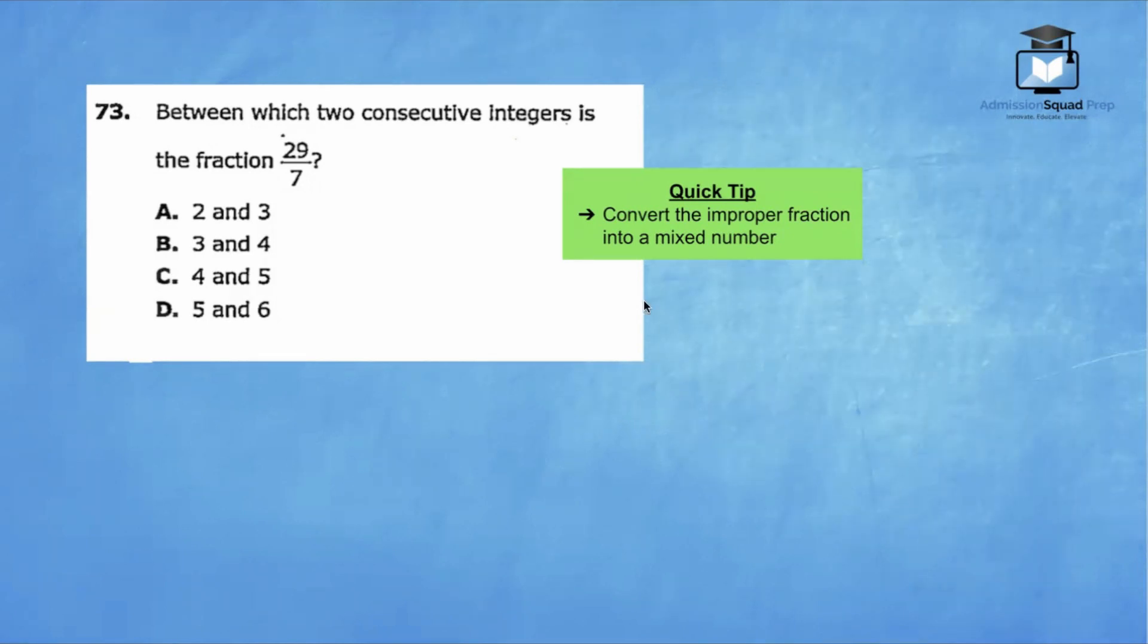73. Between which two consecutive integers is the fraction 29 over 7? Our quick tip is to convert the improper fraction into a mixed number.